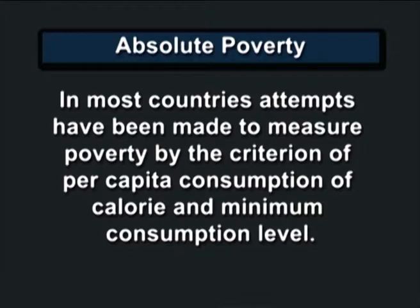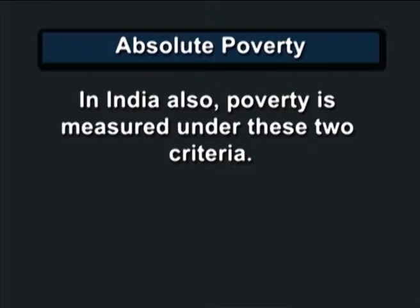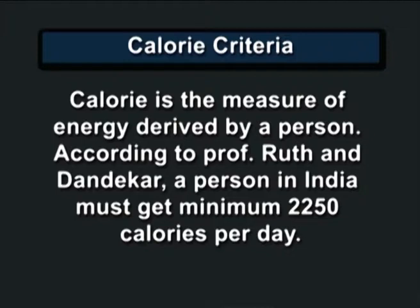Absolute poverty refers to poverty keeping in view the economic conditions of a country. In most countries, attempts have been made to measure poverty by the criteria of per capita consumption of calorie and minimum consumption level. In India also, poverty is measured under these two criteria. The calorie criteria — calorie is the measure of energy derived by a person. According to Professor Ruth and Dandekar, a person in India must get a minimum of 2250 calories per day.